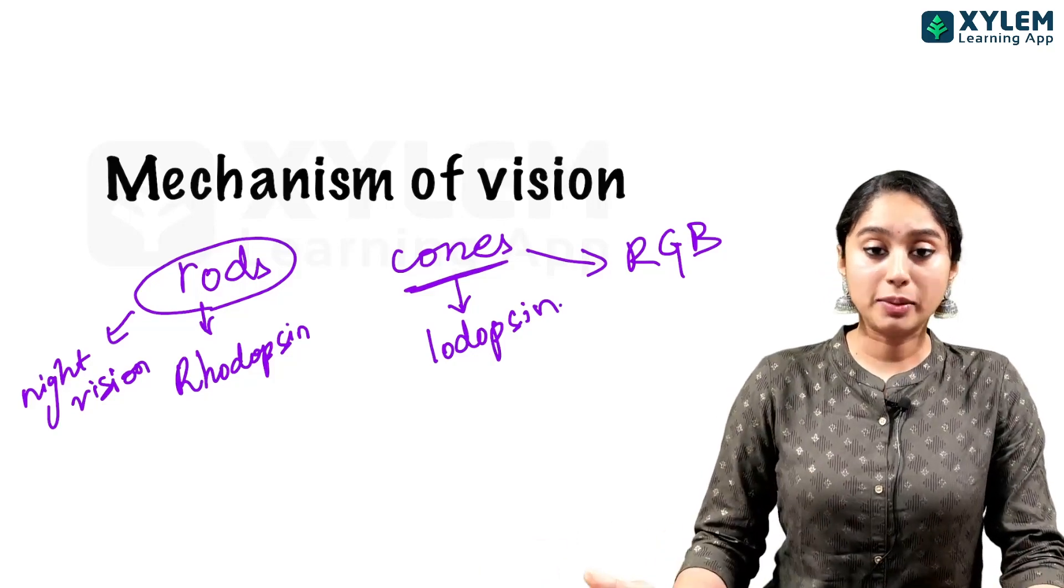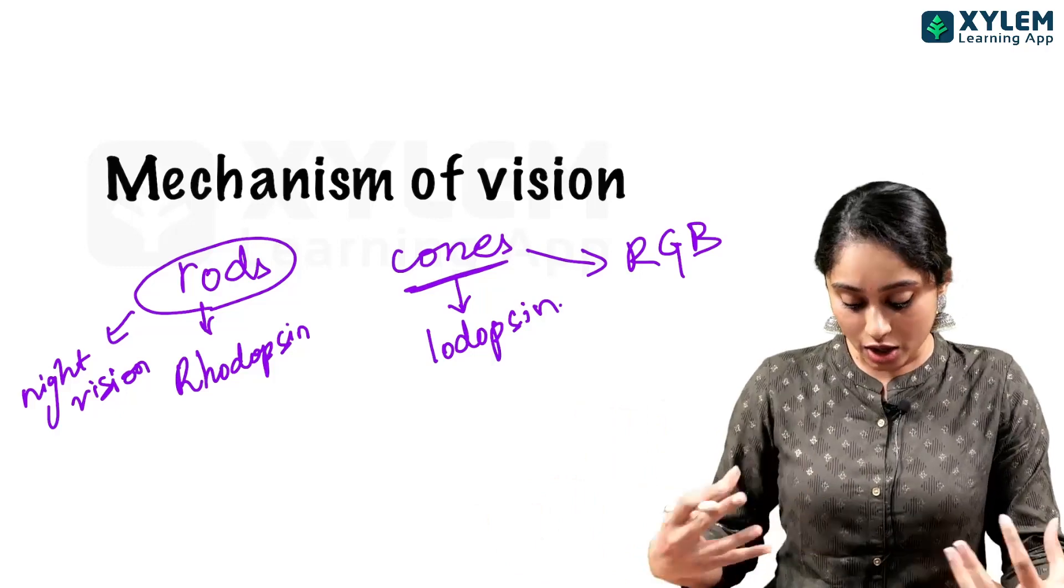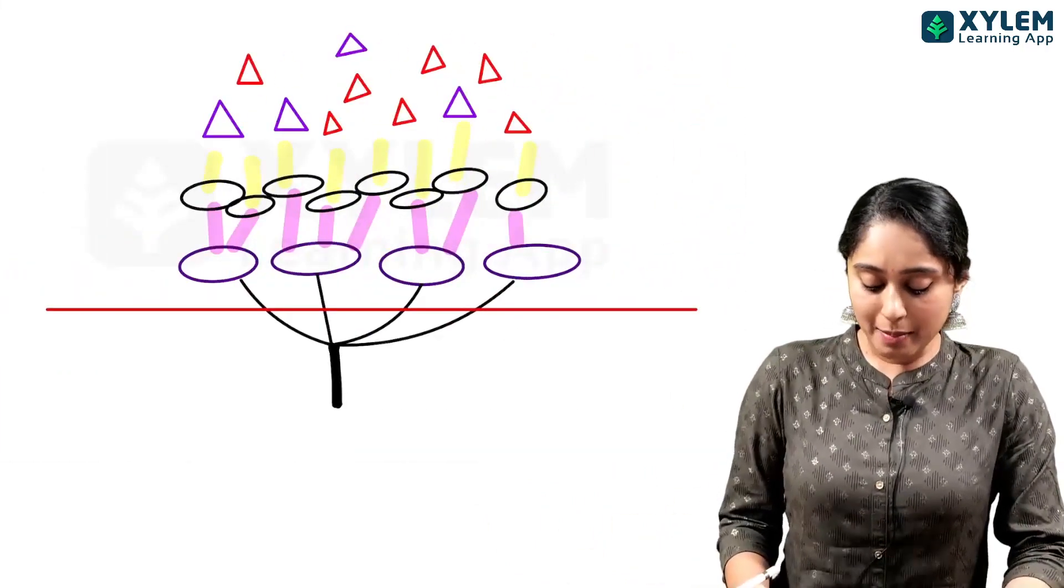Rods and cones are there. In the retina, there are specific spots where rods and cones are present. Now, mechanism of vision.